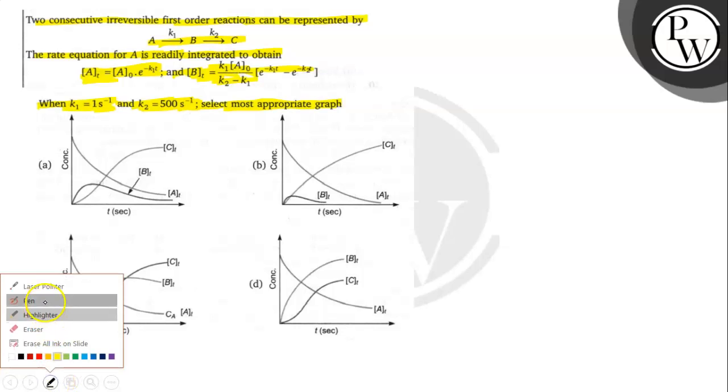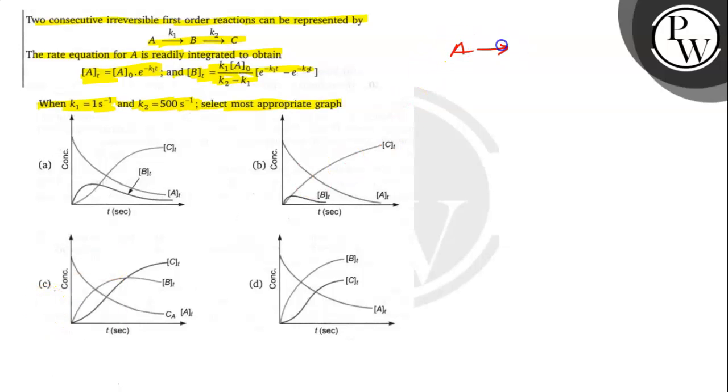What are the question and reaction here? When A gives rise to B with rate constant K1, then B gives rise to C in presence of K2.